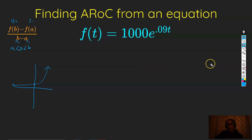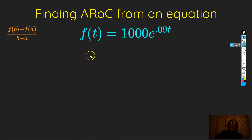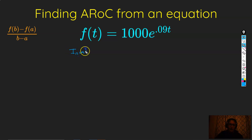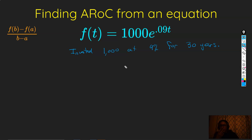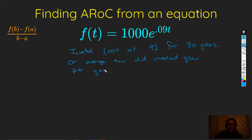Let's say we have a great aunt who put $1,000 in the bank for us upon her untimely demise, and you don't find out about it until 30 years later — $1,000 invested at a 9% return for 30 years. On average, how did the investment grow per year between years 0 and 30?